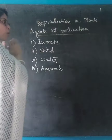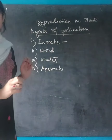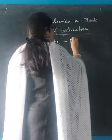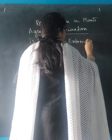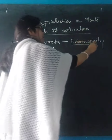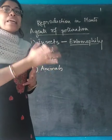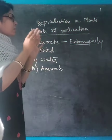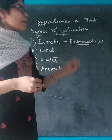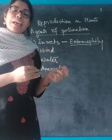This pollination taking place with the help of these agents has a certain name. When pollination takes place with the help of insects, this type of pollination is known as entomophily. The word 'entomo' relates to insects, and 'phily' means a liking or fondness — here, a liking for insects — where insects sit on a male flower, take pollen grains, and carry them to a nearby female flower of the same species.